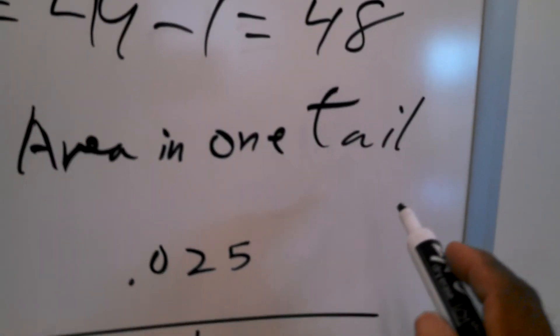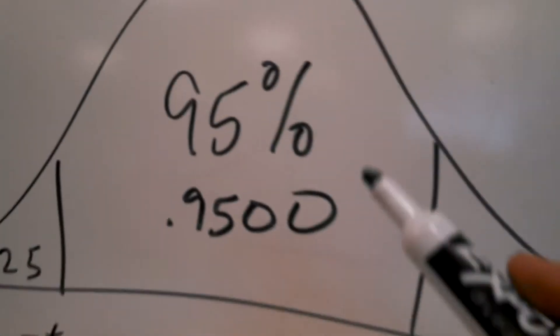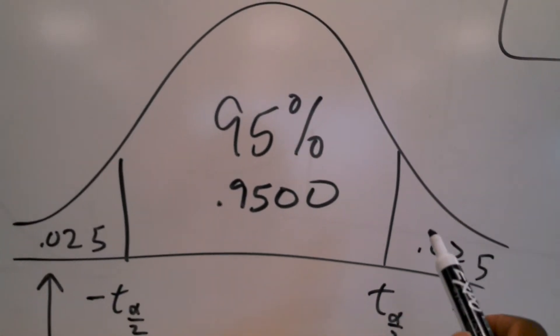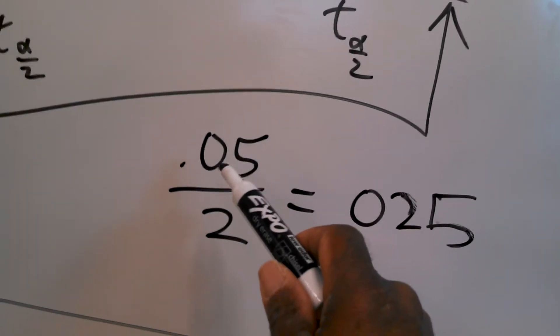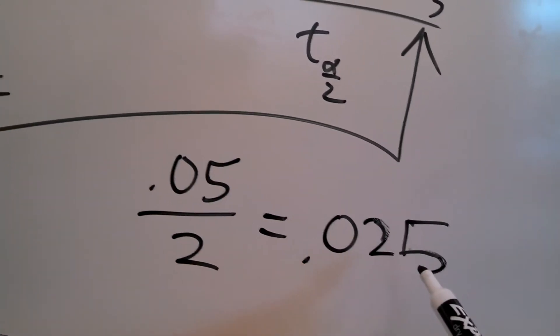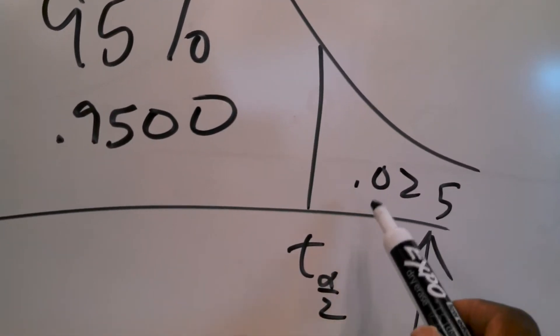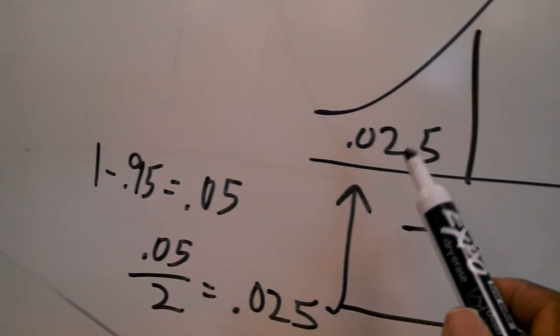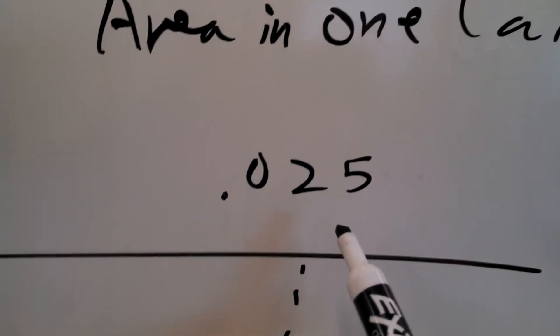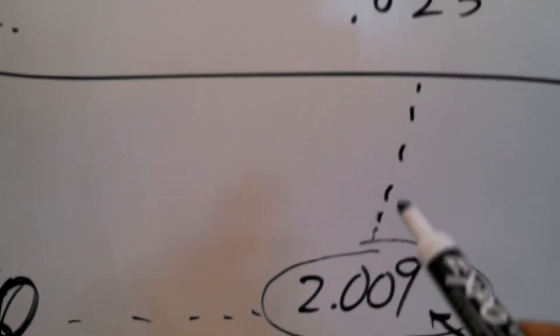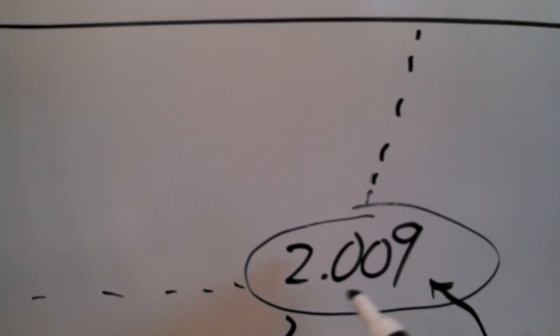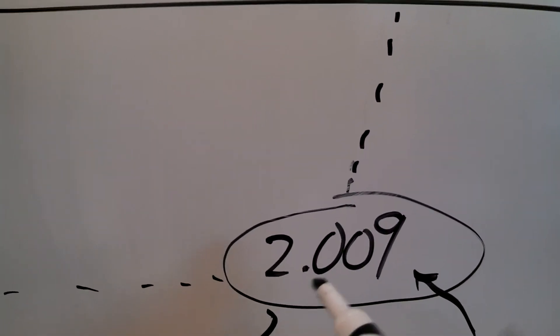After finding the degrees of freedom row, we look across the top for the area in one tail. For a 95% confidence interval, there is 5% in both tails combined, so dividing by 2 gives 0.025 in each tail. That is what we look for across the top of the table. Where the row for 50 degrees of freedom intersects the column for 0.025, we find T sub alpha over 2 equals 2.009.